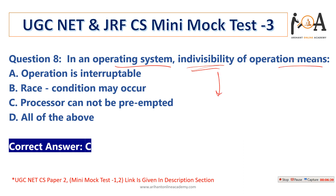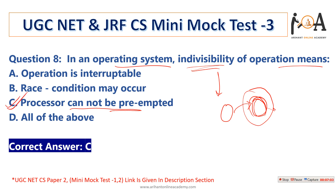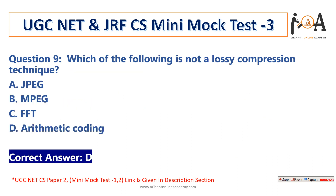The next question: in an operating system, indivisibility of operation means — suppose a process is executing, then until and unless that process completes or executes successfully, it will not be stopped or suspended. The processor cannot be preempted while the process is executing. That is the meaning of indivisibility of operations. Option C is the correct answer.